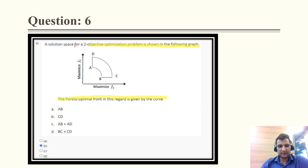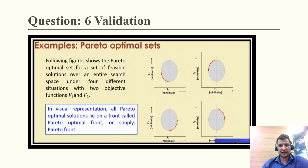Question 6: a solution space for a two-objective optimization problem is shown in the graph, showing the Pareto optimal front. There are two functions f1 and f2, and both are to be minimized. If we want to minimize both functions, then the Pareto optimal front will be CD. The correct option is option B, which is CD.